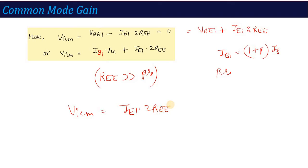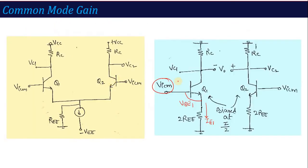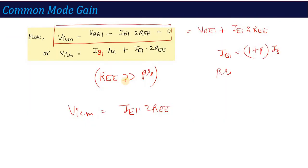So ultimately this KVL gives us: VICM minus VBE1 minus IE1 into 2REE equals zero. Neglecting the VBE drop because it is very low, VICM is exactly equal to IE1 into 2REE. Therefore, the value of IE1 is VICM divided by 2REE.